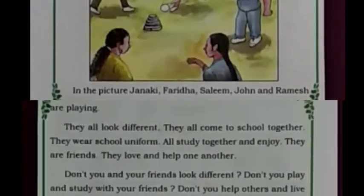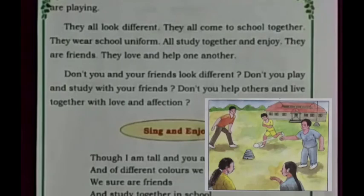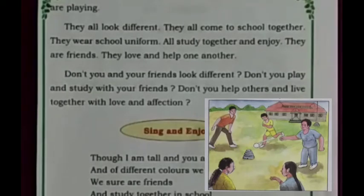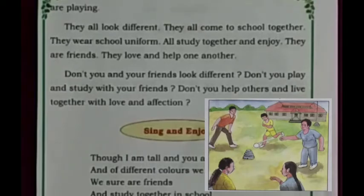John and Ramesh are playing. They all look different. They all come to school together. They wear school uniform. All study together and enjoy. They are friends. They love and help one another. Don't you and your friends look different? Don't you play and study with your friends? Don't you help others and live together with love and affection?